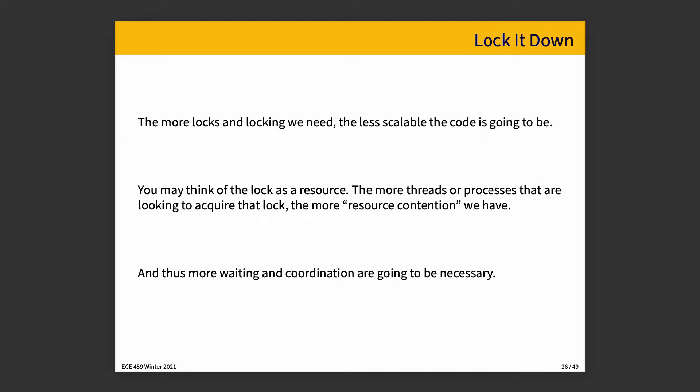One of them is about locks. The more locks and locking that we need, the less scalable the code is going to be. In the extreme where everything is completely locked down so there's no possibility of race conditions, there's no point in trying to parallelize your program because it's already completely sequential. Think of a lock as a resource — the more threads or processes trying to acquire that lock, the more resource contention we have.